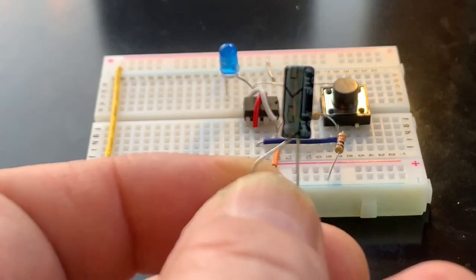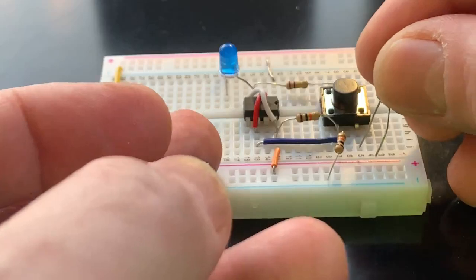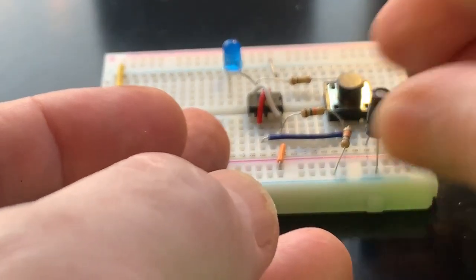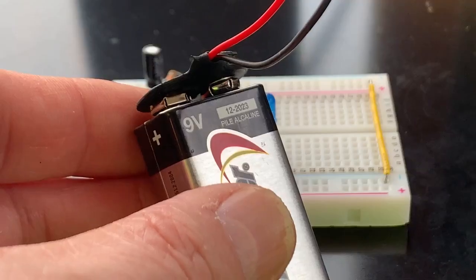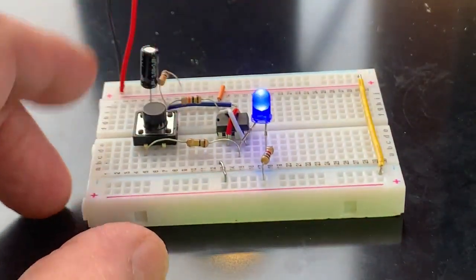The last thing we need is the one microfarad capacitor. We'll put it in with the anode facing the switch and the cathode to ground. So if we connect a nine volt battery to it now, the circuit should work. And it does.